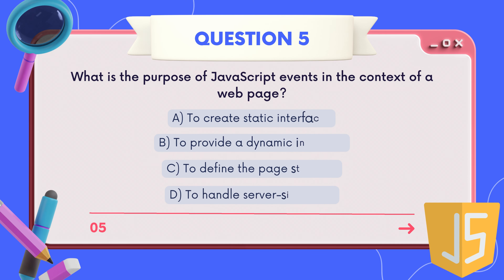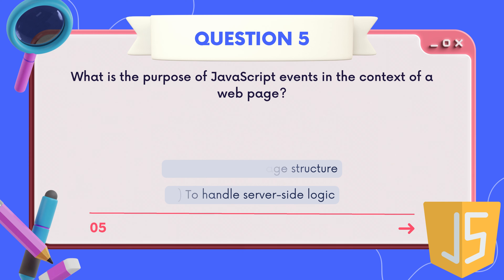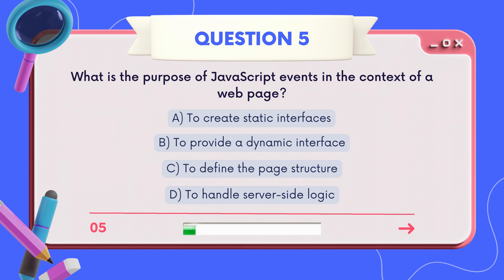Question five: what is the purpose of JavaScript events in the context of a web page? A) to create static interfaces, B) to provide a dynamic interface, C) to define the page structure, D) to handle server-side logic. Choose wisely!